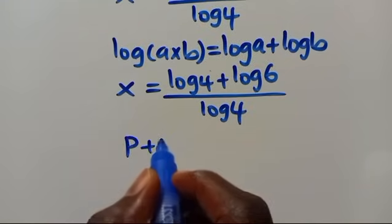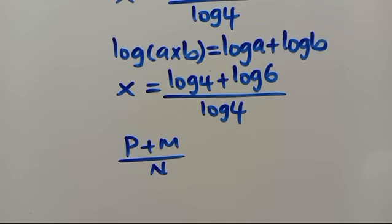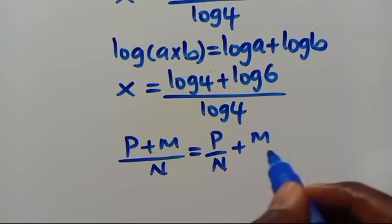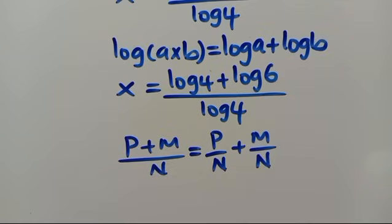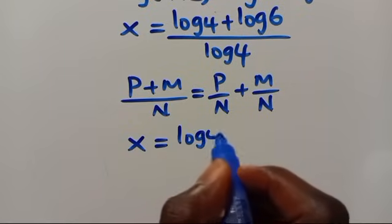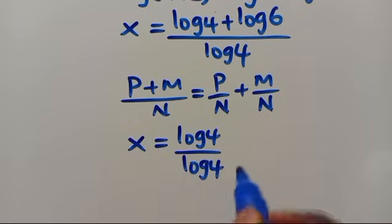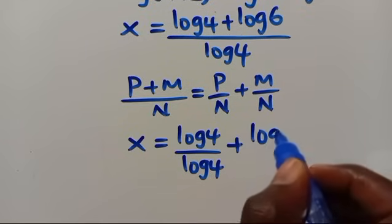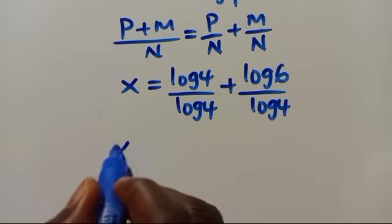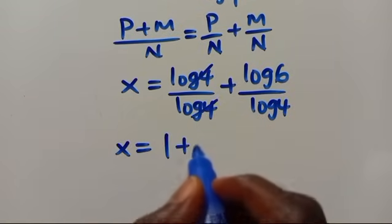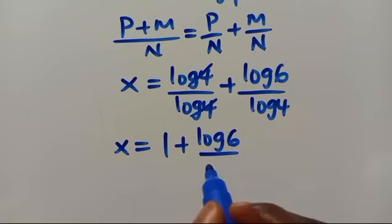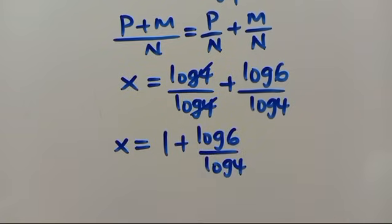Recalling that (P + M) over N can be split as P over N plus M over N, we split the fraction to get X equals log 4 over log 4 plus log 6 over log 4. Since log 4 over log 4 equals 1, we have X equals 1 plus log 6 over log 4.